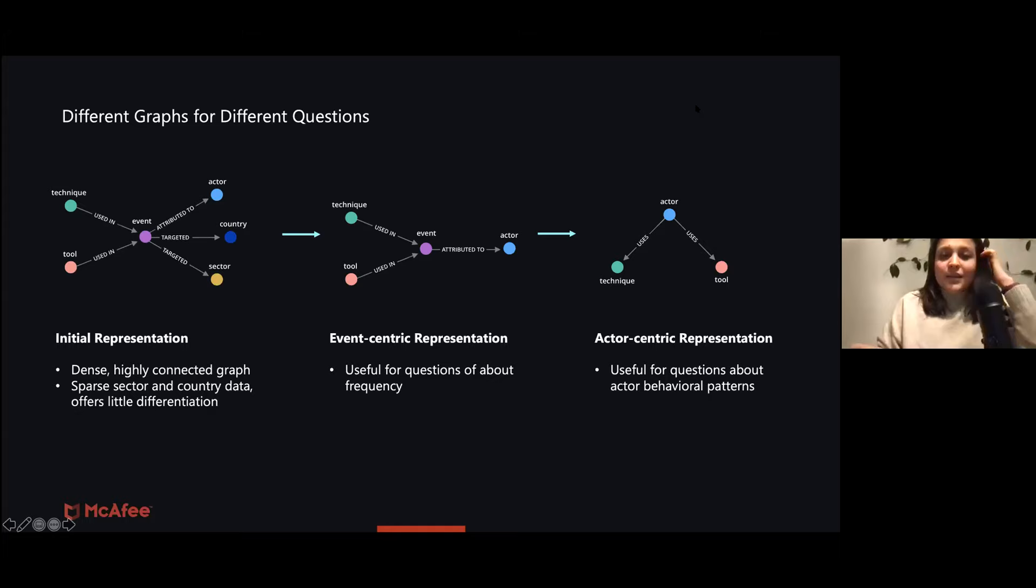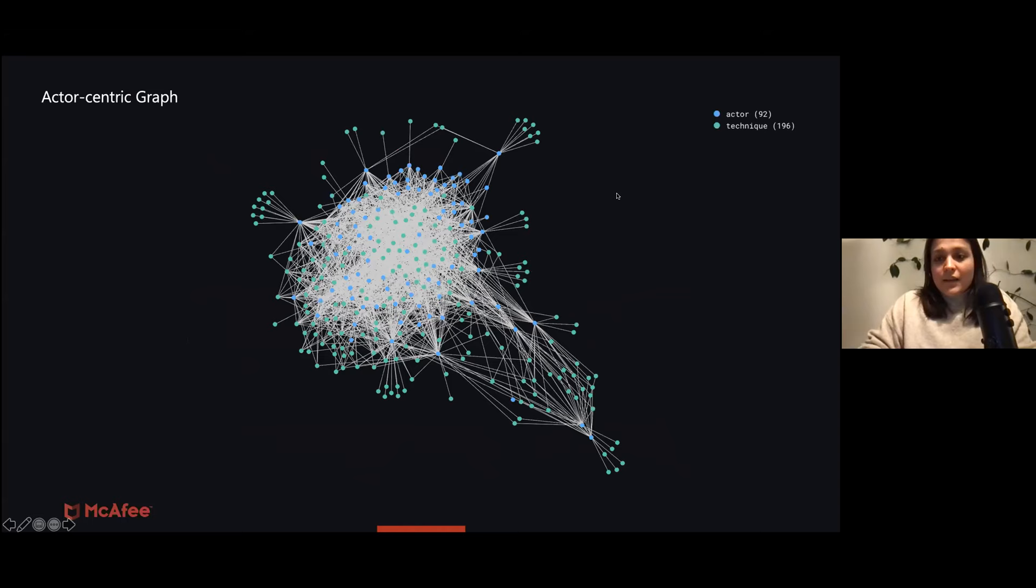Then we just collapse the event nodes to create an actor-centric representation to answer questions that are more about behavioral patterns, so actors using MITRE techniques. I'm going to be showing different things on these two representations, so event-centric and actor-centric. So this is our event-centric graph, and this is the actor-centric graph.